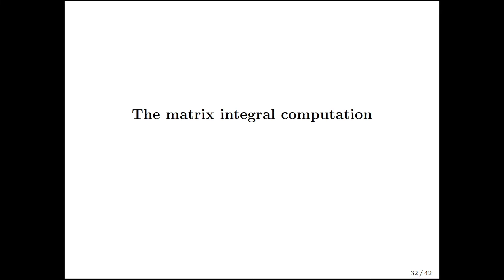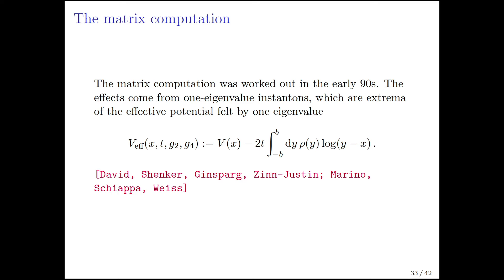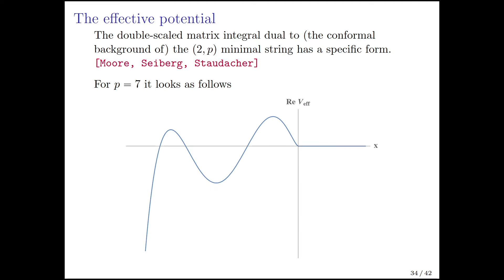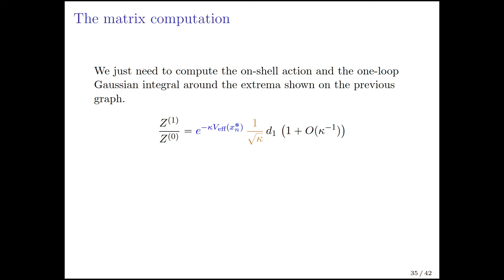The matrix integral computation. There's not much new to say because this computation was already done in the 90s and refined in the 2000s by Marino, Schiappa, and Weiss. A single eigenvalue in the matrix feels an effective potential that is the combination of the bare potential and this Coulomb repulsion coming from the Vandermonde. For the 2, p family, the effective potential looks like this. The eigenvalues are on the positive x-axis, and when you go on the negative x-axis you see some finite number of extrema. All you need to do is compute the height of one of those extrema. That gives you 1 over square root of kappa and also gives you some number d1. The answer precisely matches with the string theory computation with that cotangent and i and everything.